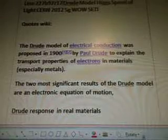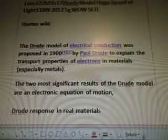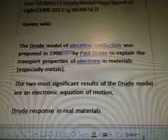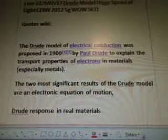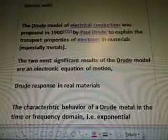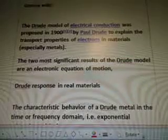The Drude model of electrical conduction was proposed in 1900 by Paul Drude to explain the transport properties of electrons and materials, especially metals. Two most significant results of the Drude model are an electronic equation of motion.